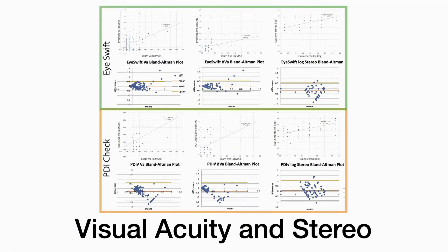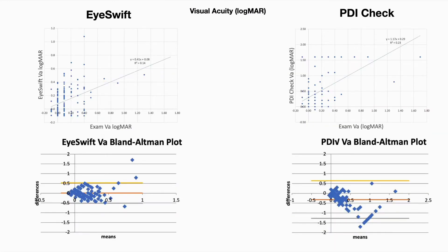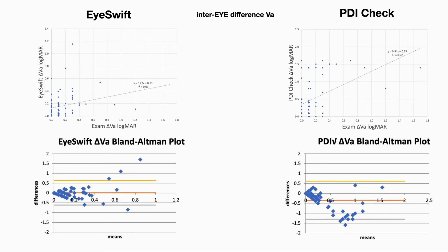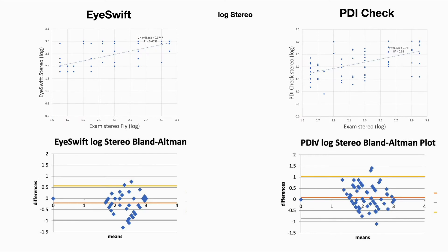So let's check first those that can assess visual acuity and stereo. Looking at visual acuity, the standard deviation of the difference for iSwift was slightly smaller than that for dynamic acuity testing with PDI Check. This is also true for the inter-eye difference. As far as stereo is concerned, Randot on iSwift and dynamic discs on PDI Check had fairly similar standard deviation of the difference.